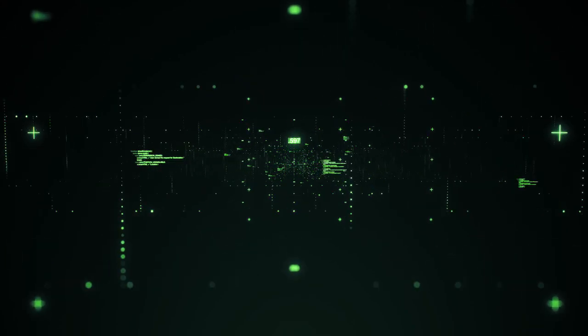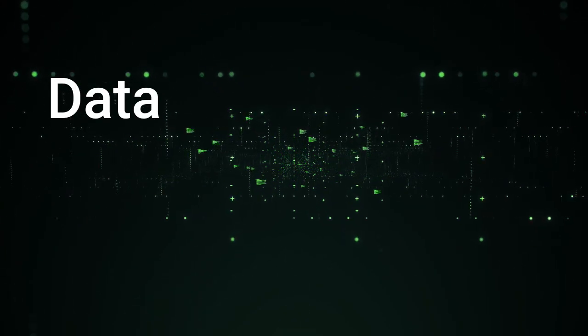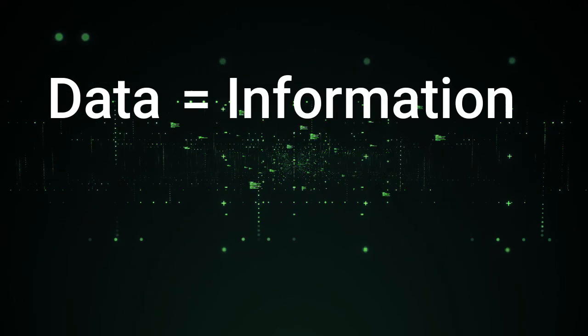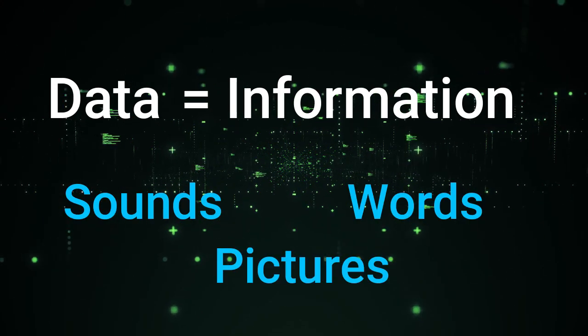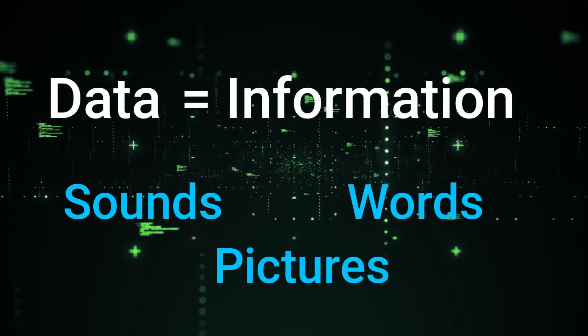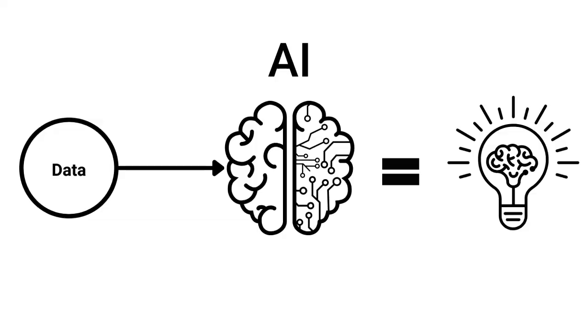Now to teach this brain, we use something called data. Data is basically just information, like sounds, pictures, or words — anything that we record is basically data. Just like how we learn by seeing and hearing things around us, AI learns from the data that we feed into it.